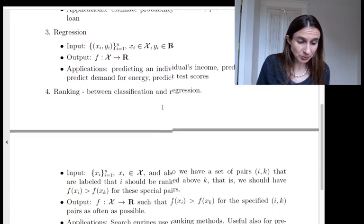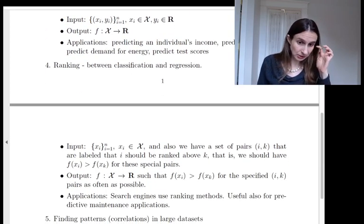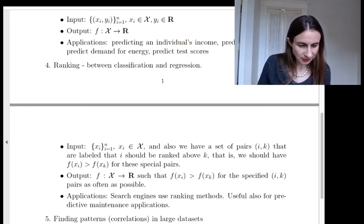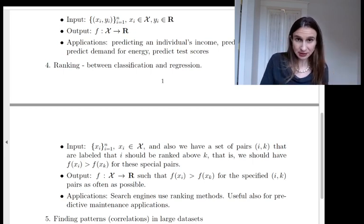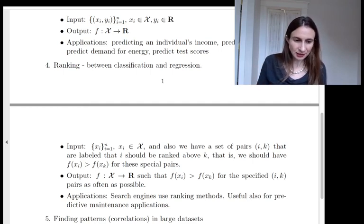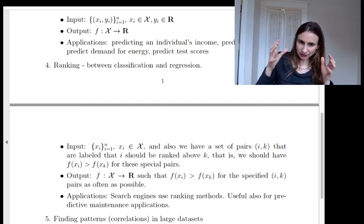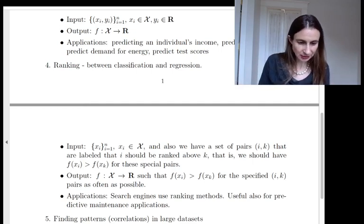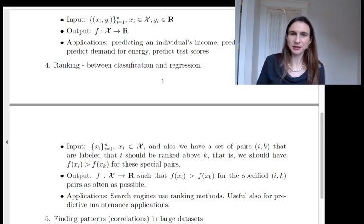Okay, ranking. Supervised ranking is a really interesting problem. It's somehow in between classification and regression. So for ranking, the labels are actually on pairs of data. So your input is just x's, but the labels are these special pairs. So you have a pair of data points i, k, that are labeled in a way that we think i should be ranked above k.